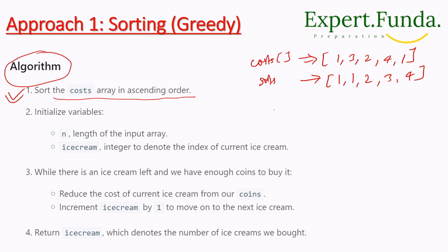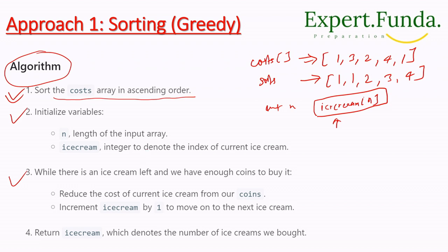We initialize n as the length of the input array and take a variable ice_cream starting at zero to track the current index. While there is an ice cream left and we have enough coins to buy it, we reduce the cost of the current ice cream from our coins, increment ice_cream by one, and move to the next.